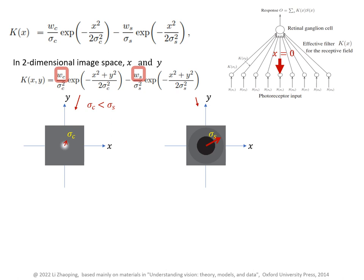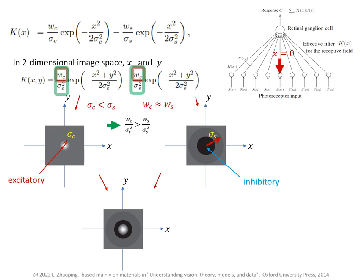And these two weights W_c and W_s model the strengths of the two Gaussians. They often have similar values. Then the coefficients for the two exponentials are such that the first coefficient is larger than the second one. So the excitatory strength of the first Gaussian at the very center is stronger than the inhibitory strength of the second Gaussian at the very center. Then combining them together gives this receptive field. This is called a center-surround receptive field, with the center contributed mostly by the first Gaussian and it's surrounded mostly by the second Gaussian.